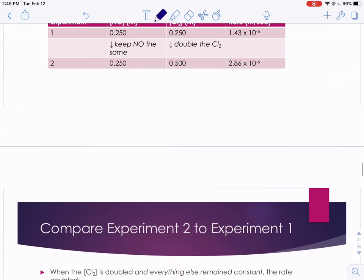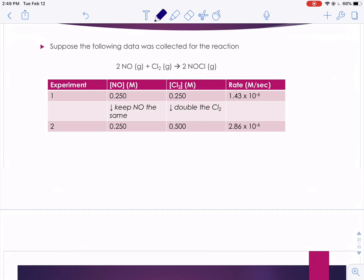And when we do that, this guy also is doubled. When we go 1.43 times 10 to the negative 6, if we double that 2.86 times 10 to the negative 6. So doubling the chlorine concentration ended up doubling the rate.